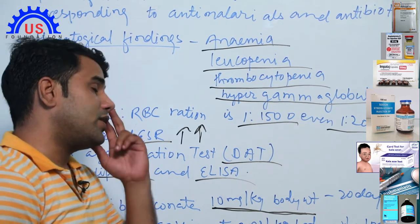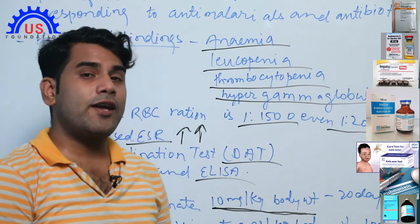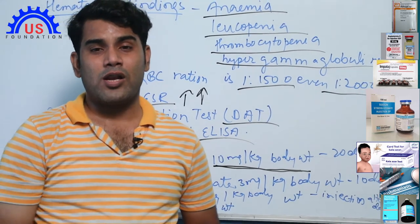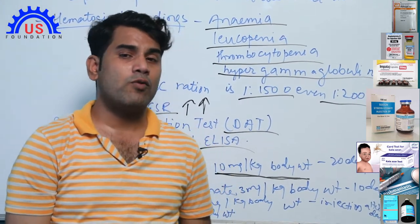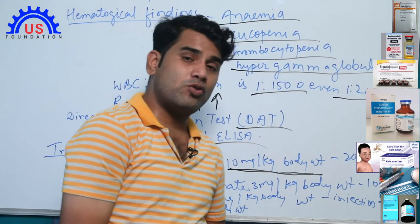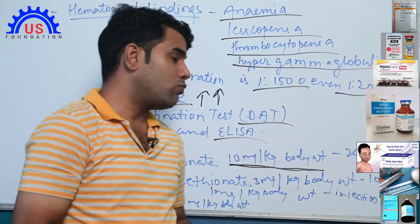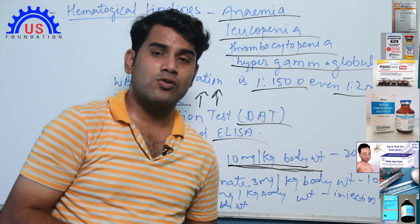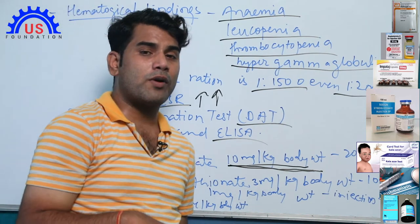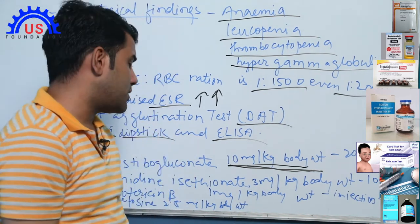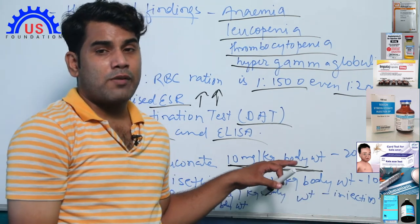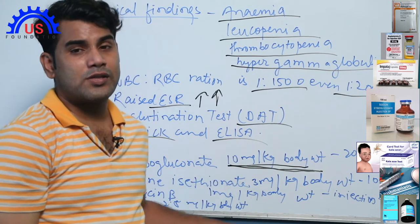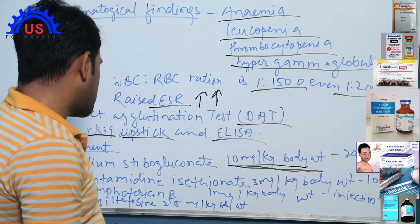Additionally, Pentamidine isethionate is given at 3 mg per kg body weight for 10 days. Amphotericin B is given at 1 mg per kg body weight on alternate days — if given today, it is skipped tomorrow, then given again the day after. The dosages I am mentioning are per body weight; the doctor calculates and multiplies according to the patient's weight to prepare the prescription. A specific fixed dose cannot be stated — it is all body-weight based.